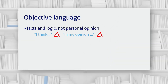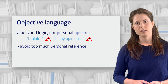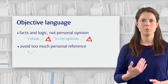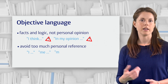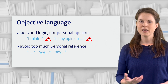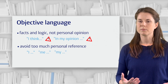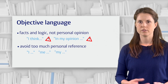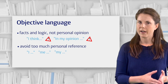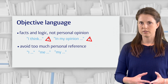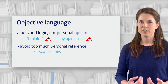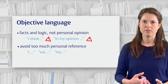Secondly, to write objectively you should avoid too much personal reference. If your writing contains a lot of references to 'I,' 'me,' or 'my,' you may need to think about whether you're really being objective enough. When you stick to facts and evidence you don't really need to refer to yourself very often.